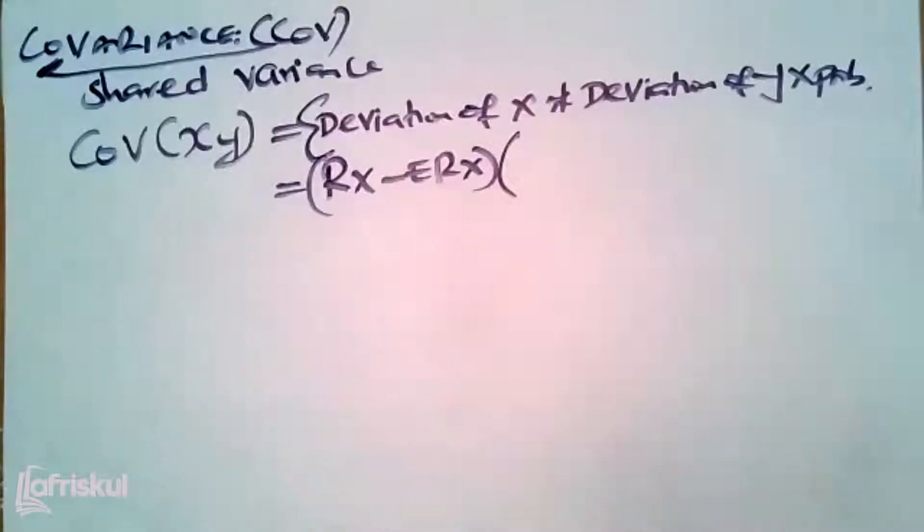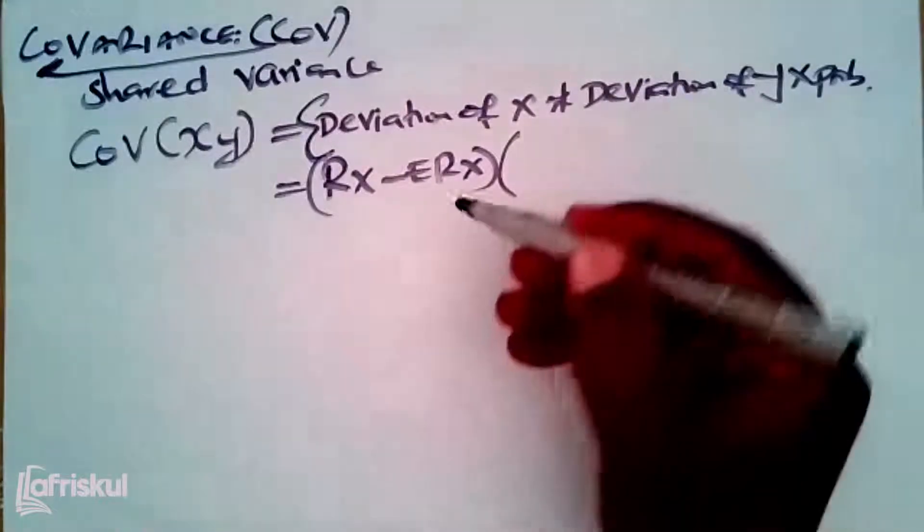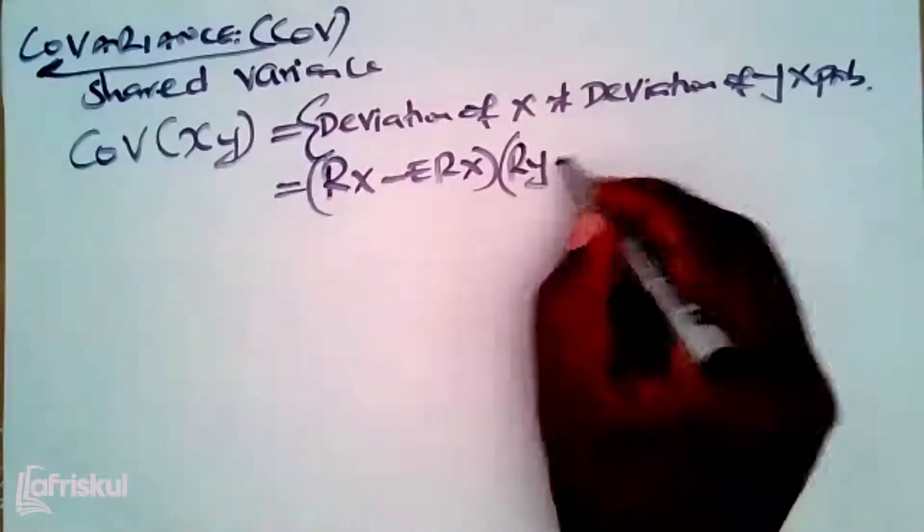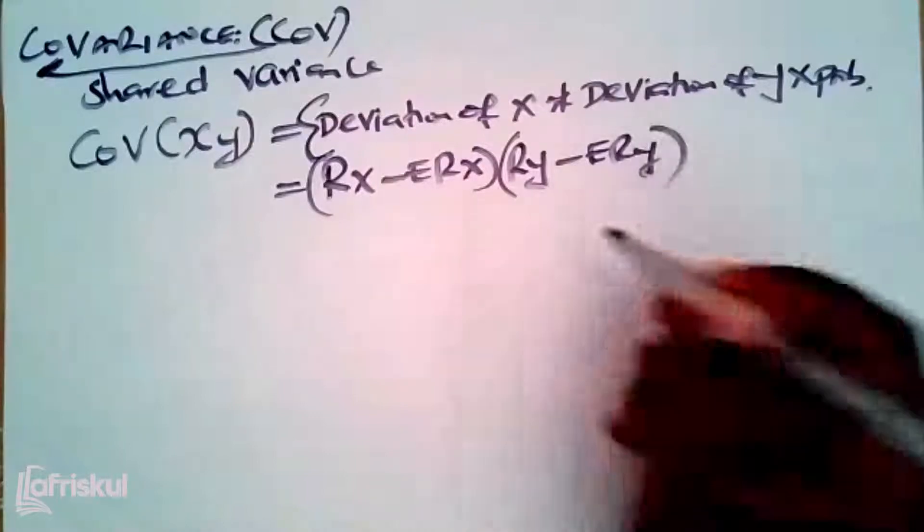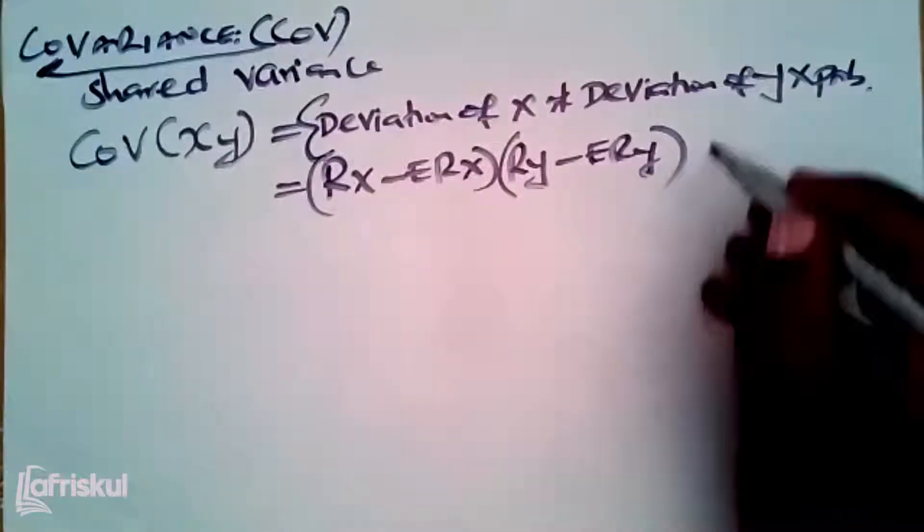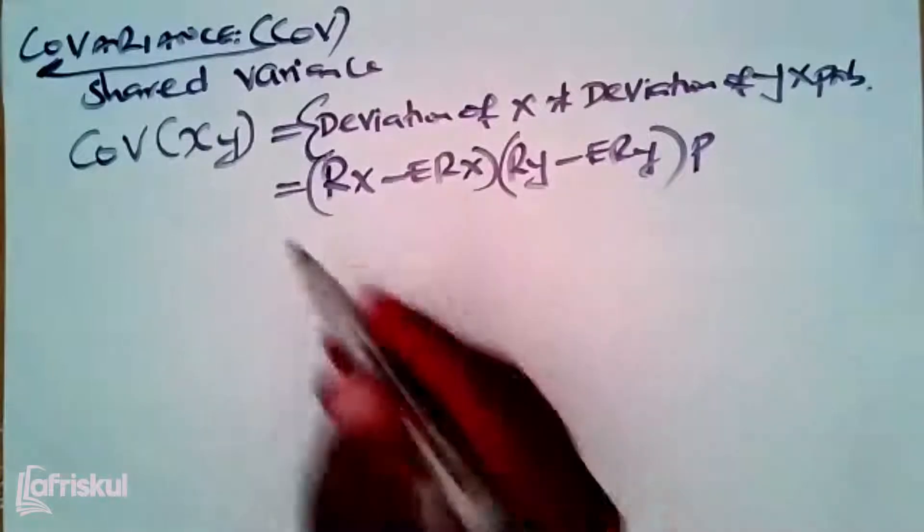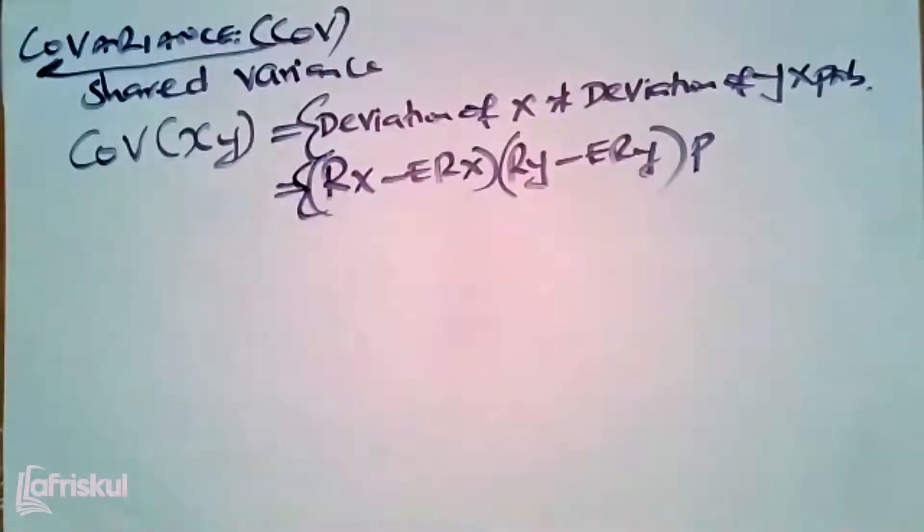Into - we have deviation of y. Deviation of y, we have actual return of y minus expected return of y, times the probabilities, and then you will come and do the sum.